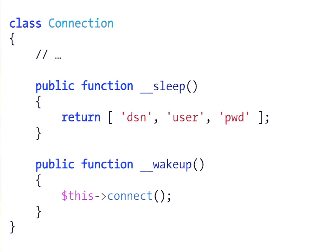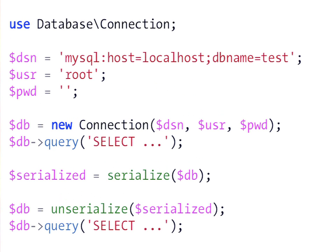The __wakeup function performs the opposite operation. When you execute the unserialize PHP function, the object is recreated using this wakeup function, which automatically reconnects to the database by calling the connect method. So you can serialize the object for storage, and when you unserialize it later, the wakeup function reconnects to the database.